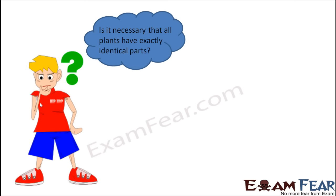A question that might come to mind is whether all plants have exactly identical parts. The answer is: not really. Some plants have bigger leaves while others have smaller leaves, and some plants have no leaves at all. Some have swollen roots, others have thin or branched roots. Each part can differ in structure and function across different plants.